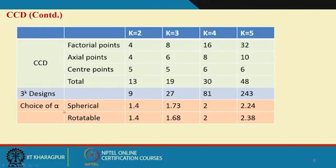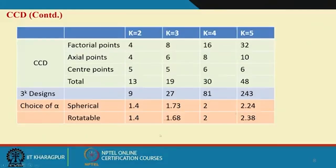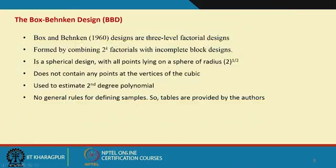If you choose alpha equal to k^(1/2) you get a spherical design. Comparing the alpha values for the spherical design and the rotatable design when k=2, 3, and 4, the values are more or less similar. This means a spherical design is very close to a rotatable one — with only marginal differences, they are almost equal at least up to k=5.